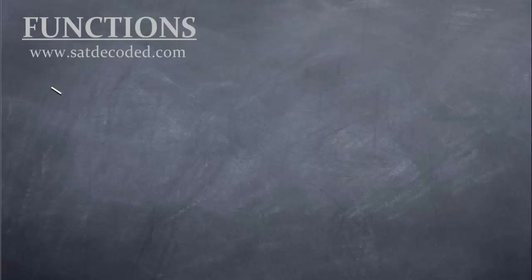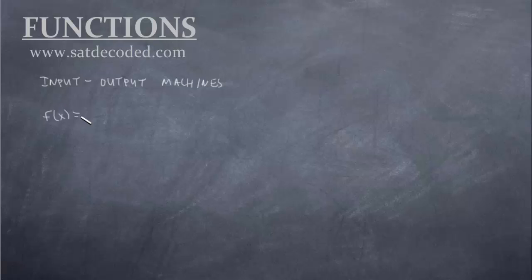Hi everyone, welcome back to SATDecoded.com. Today we're going to continue our discussion of functions. In the previous introduction video, I talked about input-output machines — that's what I define a function as. We talked about a function being something that has a role or a purpose. So if they gave you a master formula of f of x equals x squared plus 5, what is the purpose or the role of this machine?